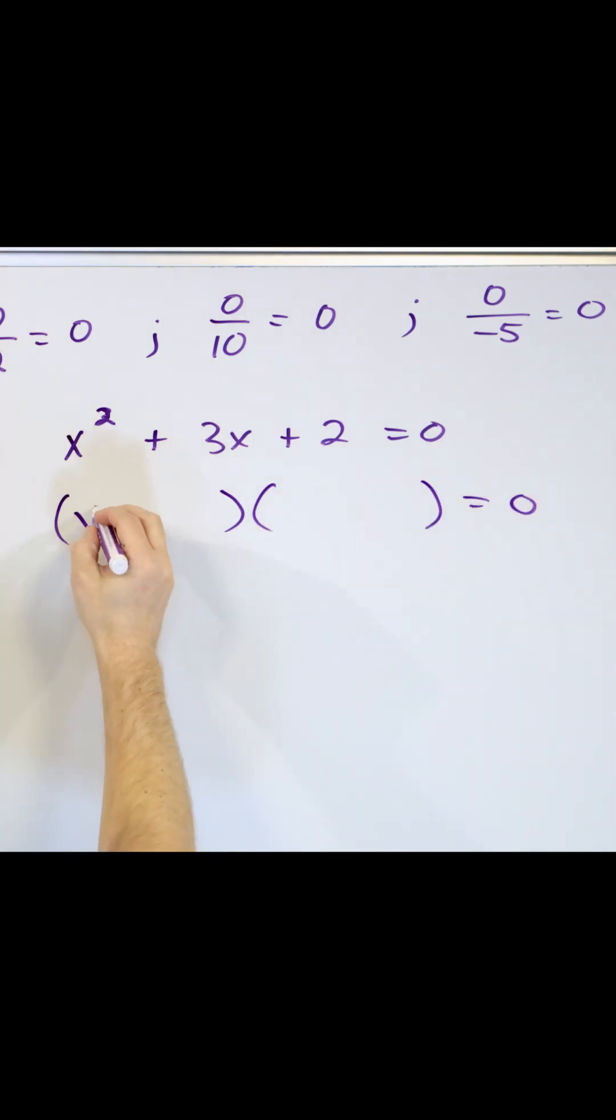x times x gives me x squared, 1 times 2 gives me 2, and the only thing that works is plus and plus.